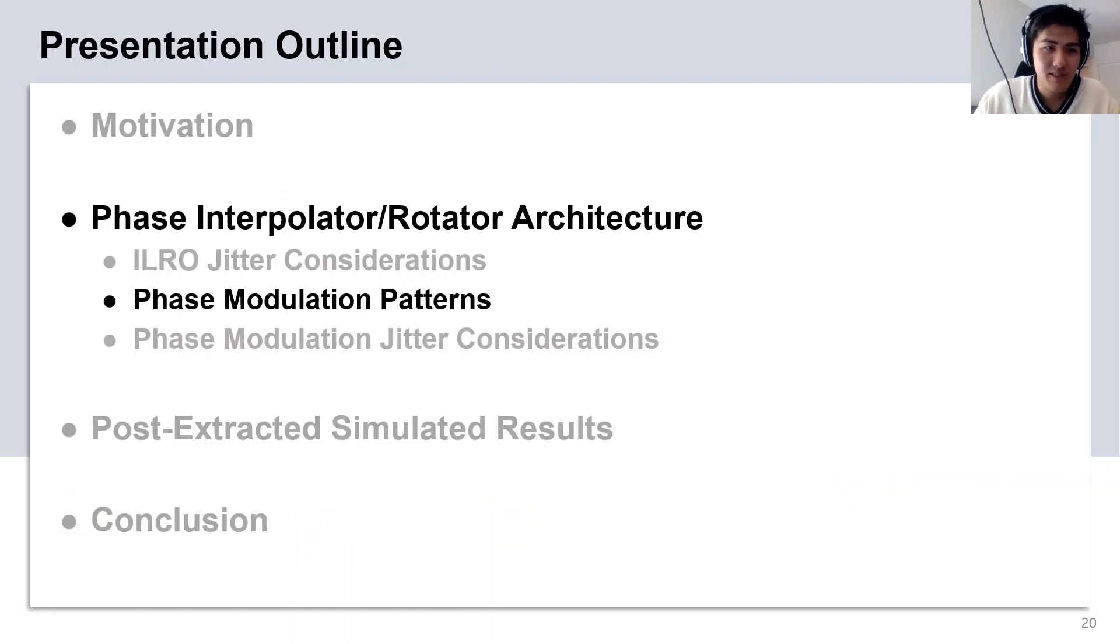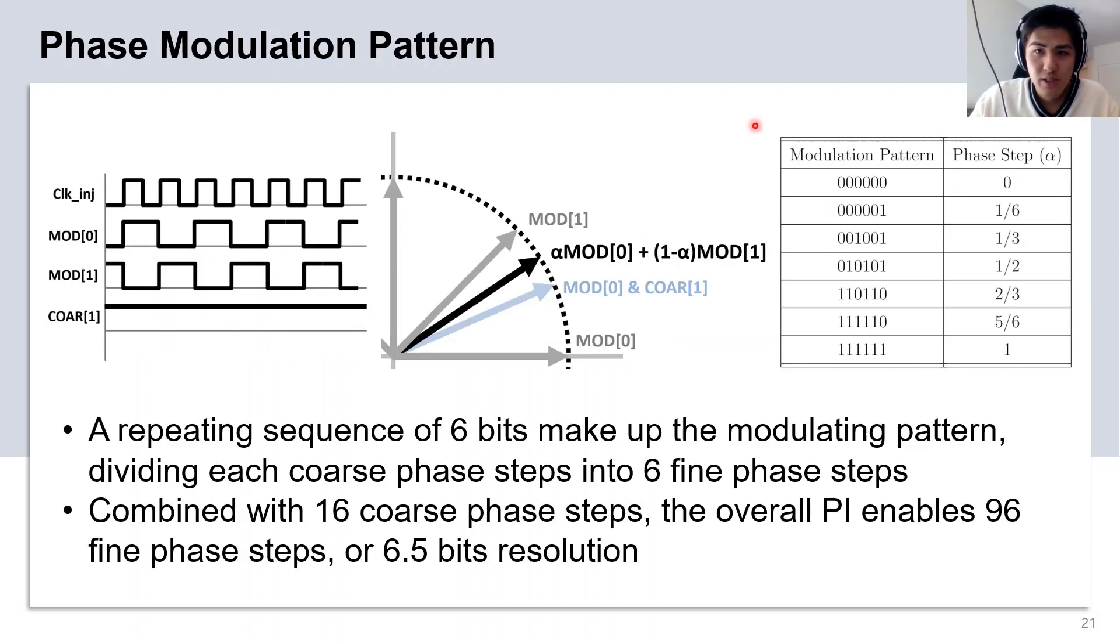Next, I want to discuss how the ILO interpolates the phase using the phase modulation patterns. The digital modulation pattern is made up of a repeating sequence of six bits, which divides each coarse phase setting into six fine phase steps. In combination with 16 coarse phase steps, this gives the PI a total of 96 fine phase steps, or 6.5 bits of resolution.